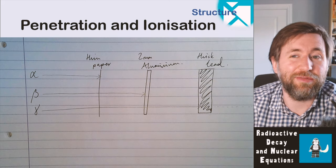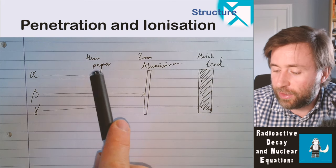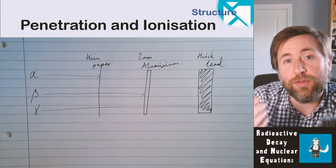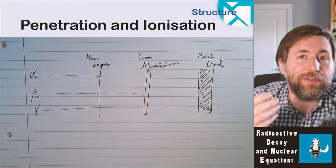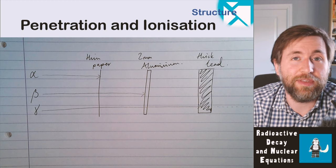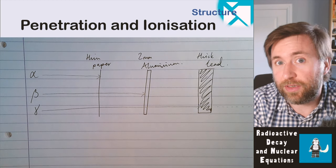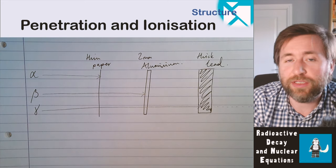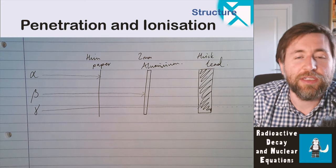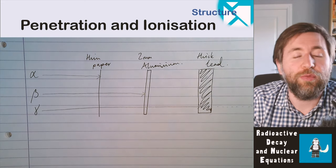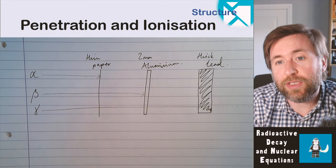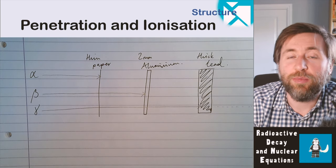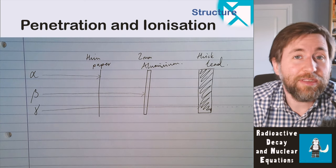Penetration and ionization are closely linked. It's because the alpha is ionizing that it doesn't get through thin paper or very far in air — as it moves through, it ionizes a lot, depositing kinetic energy by colliding with other things. It's not because of its size. Alpha is dangerous because of its ionization. You have to think of the risks in terms of whether it gets inside the body — if it does, it can be very damaging because it can be really close to cells.